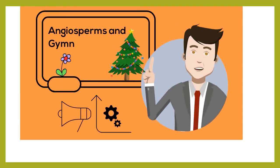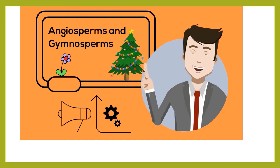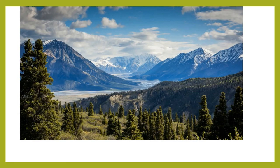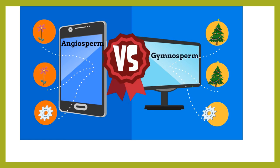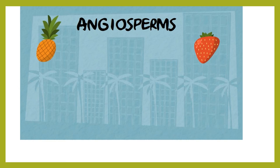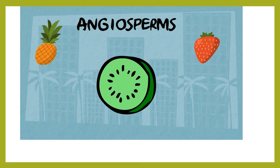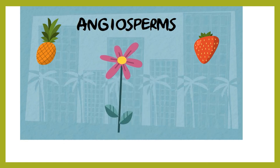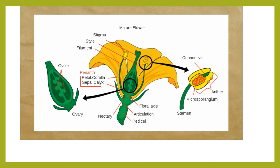Welcome to MooMoo Math and Science. In this video I'd like to talk about angiosperms and gymnosperms in major ecosystems. Plants form the foundation or base of an ecosystem — they provide oxygen and energy for many other organisms. Plants can be divided into two major categories: angiosperms and gymnosperms. Angiosperms are unique because they produce a seed encased in a fruit. The seed develops in the ovary, which is encased within the plant's flowers — angiosperms are flowering plants.